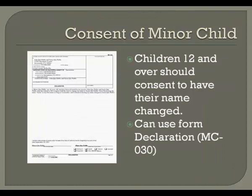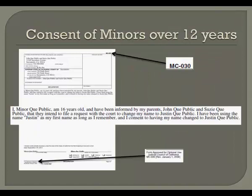If any of the persons whose name is being changed are children age 12 and over, they must consent to have their name changed. You may indicate this consent using Form MC-030, Declaration. This declaration can be very simple and should indicate that the child is aware that his or her name is being requested to be changed and that he or she consents to the change. The minor then signs the declaration.